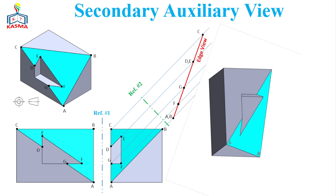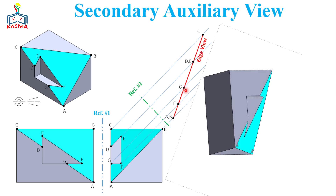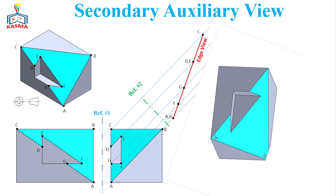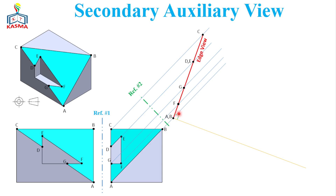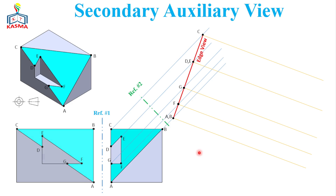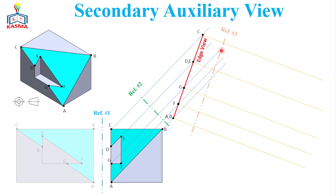The next step is to construct perpendicular lines from each point of this edge view. Those lines will project either to the right or to the left depending on available space. In this case we have space on the right side, so we project those lines to the right. Reference 1 from the front view is already complete and not needed further. Now construct Reference 3, which is parallel to this edge view, placed at an appropriate position based on available space.